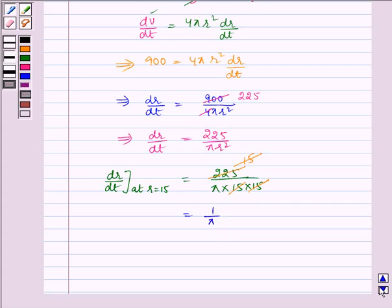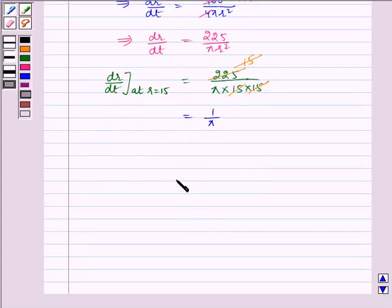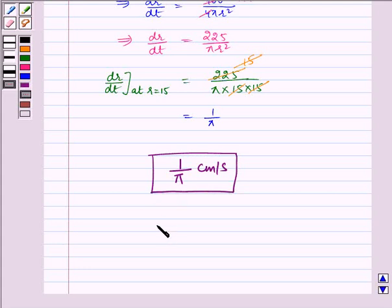Hence, the radius of the balloon increases at the rate of 1 by pi centimeter per second, which is the required answer. I hope you understood this question. Bye and have a nice day.